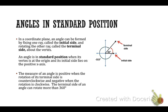Angles in standard position have their initial side on the positive x-axis. An angle is in standard position when its vertex is at the origin and its initial side lies on the positive x-axis. If that angle is rotating counterclockwise, then we say that it's positive. If the angle is rotating clockwise, then that angle measure is negative. So we can have negative angle measures.